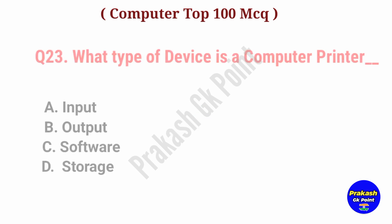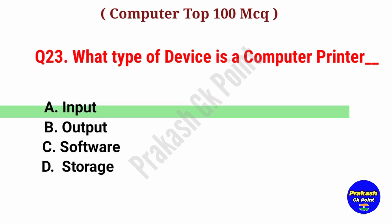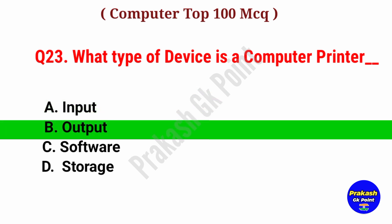What type of device is a computer printer? Answer: Option B, Output Device.